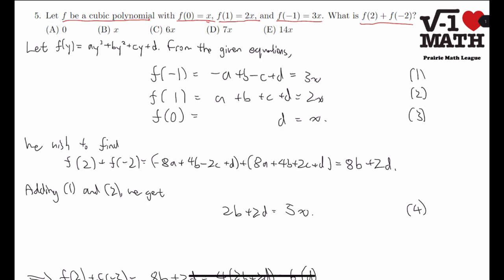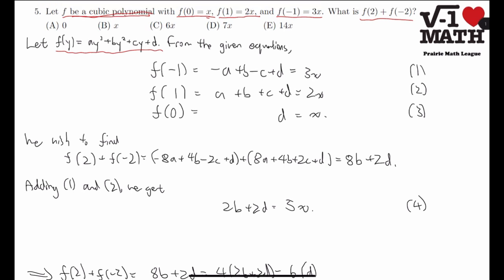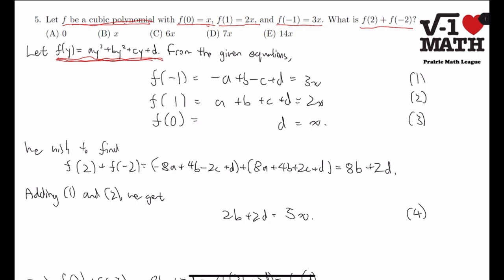So to start this problem, we express f as a cubic polynomial in this form, where f(y) equals ay³ plus by² plus cy plus d for any y. Now, suppose we have this. From the given equations, we can substitute y equals 0, y equals 1, and y equals negative 1, and get these equations.